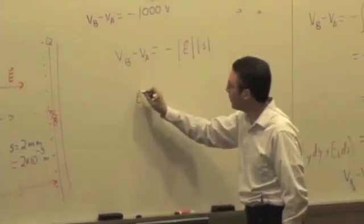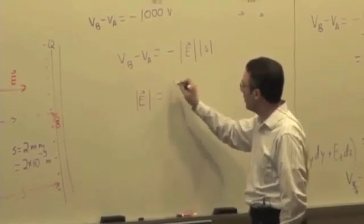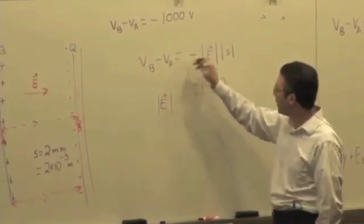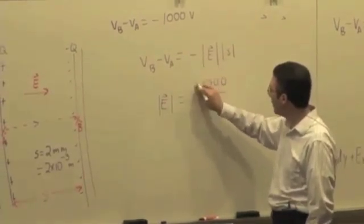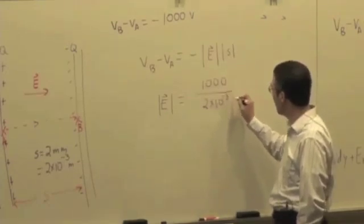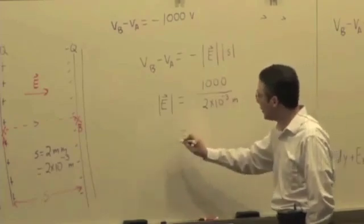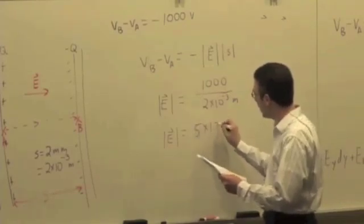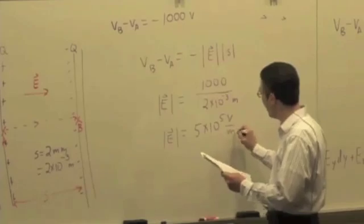So I can solve for the magnitude of the electric field by saying it's negative 1,000 volts, and the signs will cancel, so that will get me positive, times 2 times 10 to the minus 3 meters. So the magnitude of the field inside the capacitor is going to be 5 times 10 to the 5th volts per meter, okay?